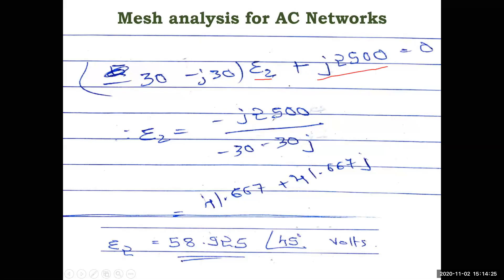To find E2: rearranging gives E2 = −j2500 / (−30 − j30). This is a complex division. You cannot solve this directly without the calculator. From the calculator we compute this ratio in polar form and then convert to rectangular form. I will show you the calculator steps in the next segment.